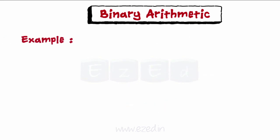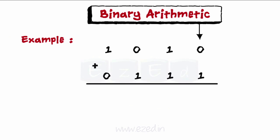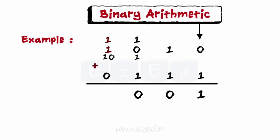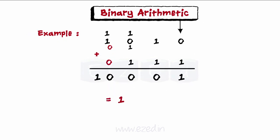Consider another example: add 1010 to 0111. Starting from the right, one plus zero is one. While one plus one is ten, so we carry this extra one on top of the next zero and place zero below. Moving ahead, we add the carried-forward one to zero, which produces one, which is again added to one, producing ten. We again carry this one on top of the next one and place zero below. One plus one gives ten, so one is carried ahead and zero plus zero is zero. So the answer is 10001.